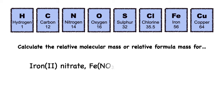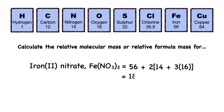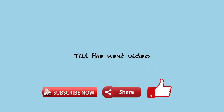Next is iron(II) nitrate, Fe(NO3)2. What is the relative formula mass for this compound? It is 56 plus 2 times the bracket 14 plus 3 times 16, which equals 180. That's all for now. Thanks for watching. See you guys!